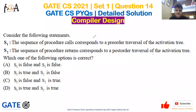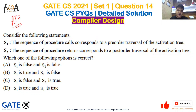Hey guys, a very warm welcome to Rehant Online Academy. In this video we are going to solve a very important question from GATE CS 2021 Set 1, question number 14, from Compiler Design. The topic is Runtime Environment (RTE). We have already discussed these things in our GATE CS lectures and a similar question has been asked here.